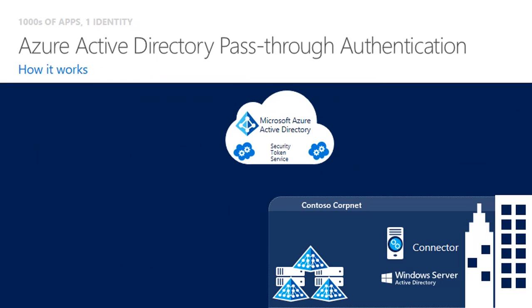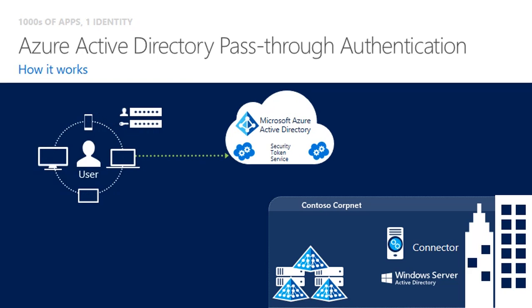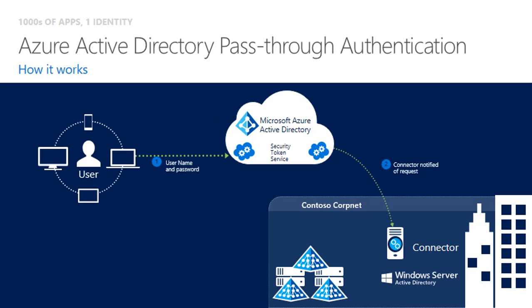So how does Azure AD pass-through authentication work? First, the user enters their username into the Azure AD login screen. It is then passed through to the connector. The connector, using its outbound connection to Azure AD, pulls the authentication request containing the username and password from Azure AD and sends it to the on-prem AD for validation.